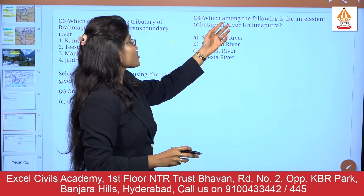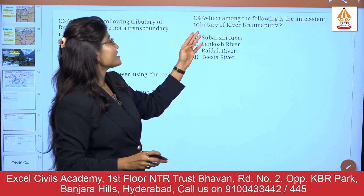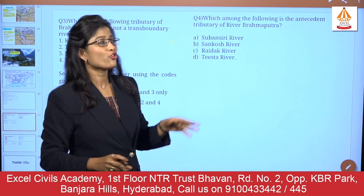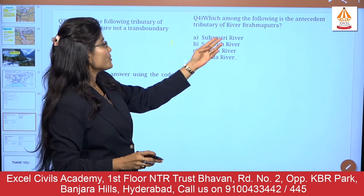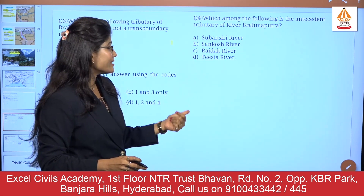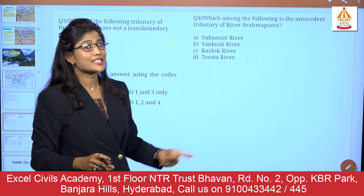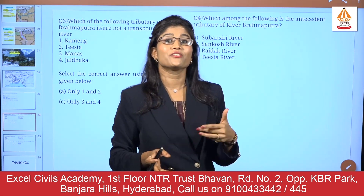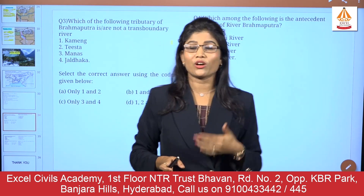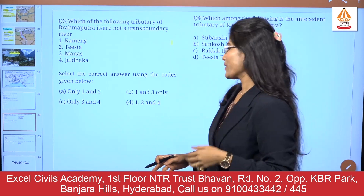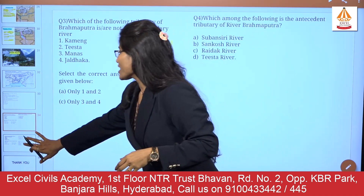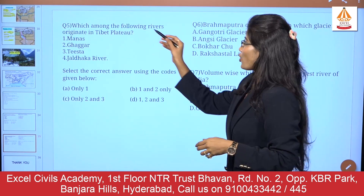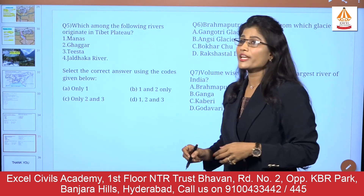The next question: which among the following is the antecedent tributary of river Brahmaputra? Four options are given — Subhansiri, Sankosh River, Raidak River, and Tista River. Also consider: what if river Manas is added as an option? What would the answer be? Now the last two questions — which among the following rivers originate in the Tibetan Plateau?